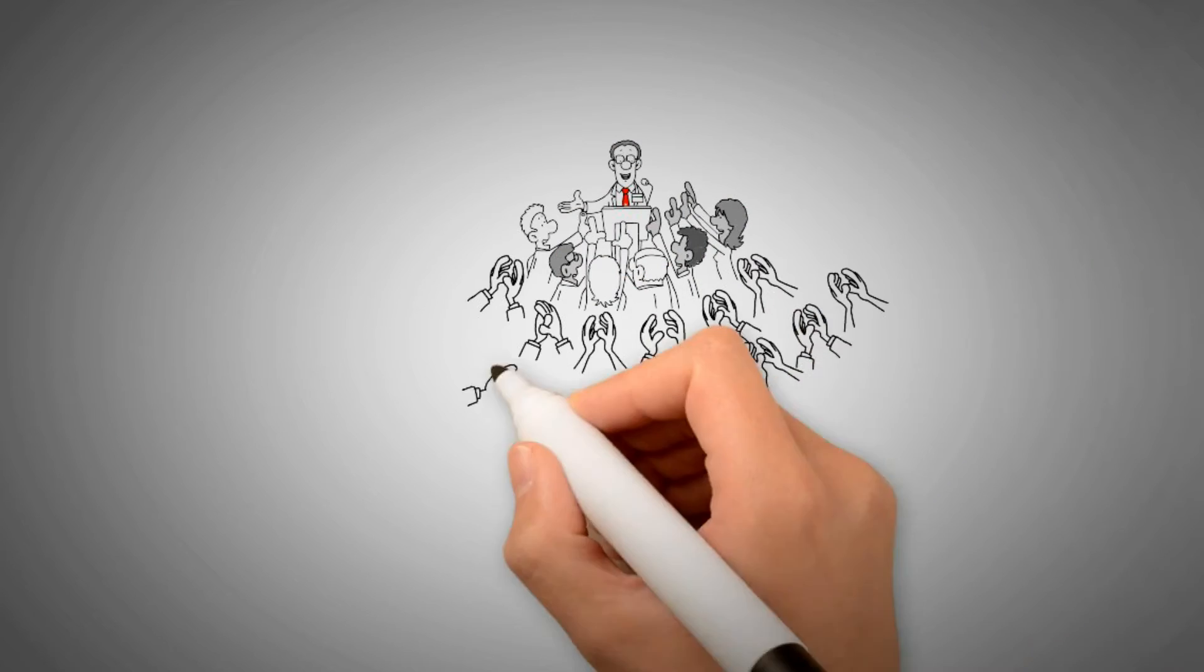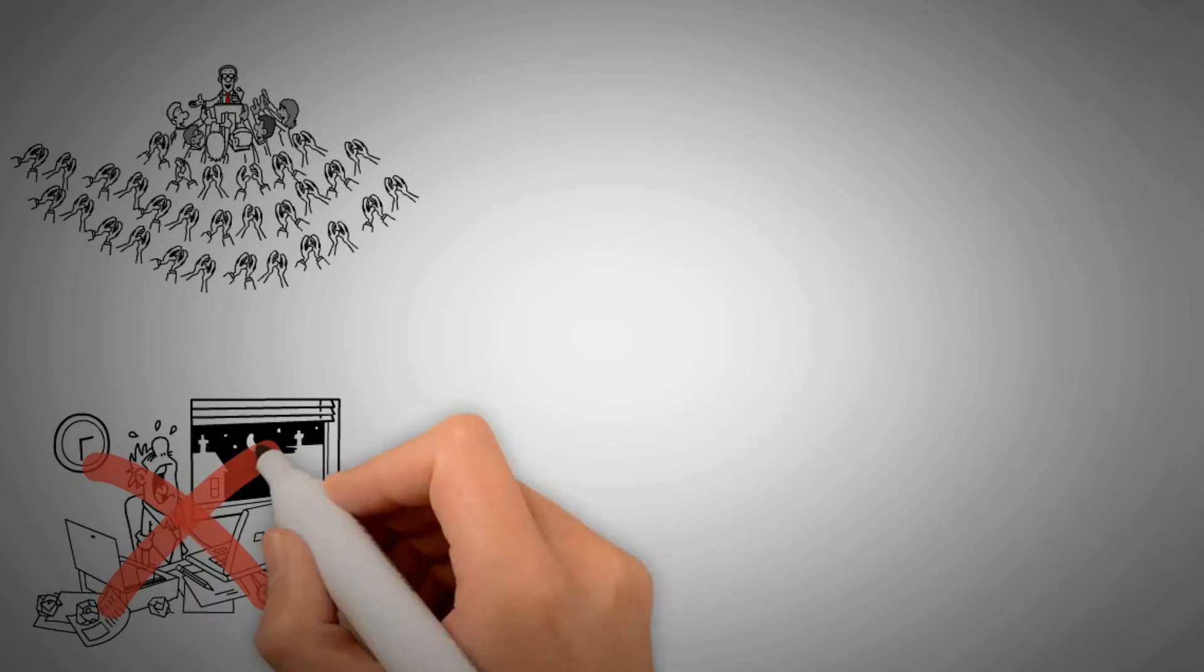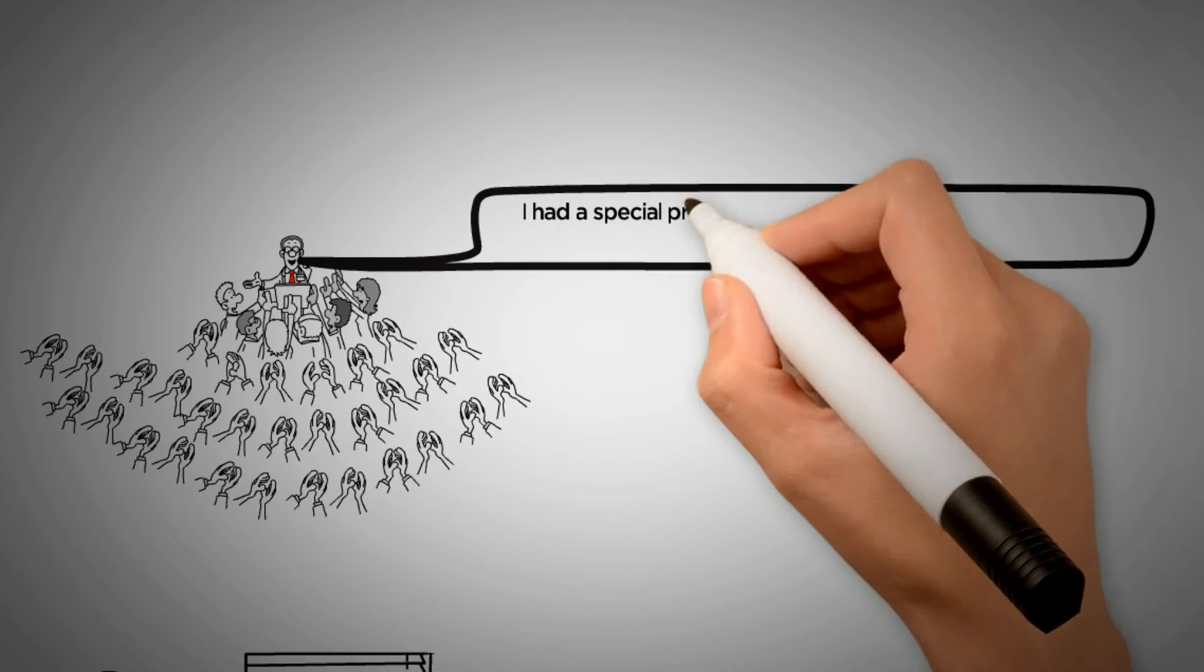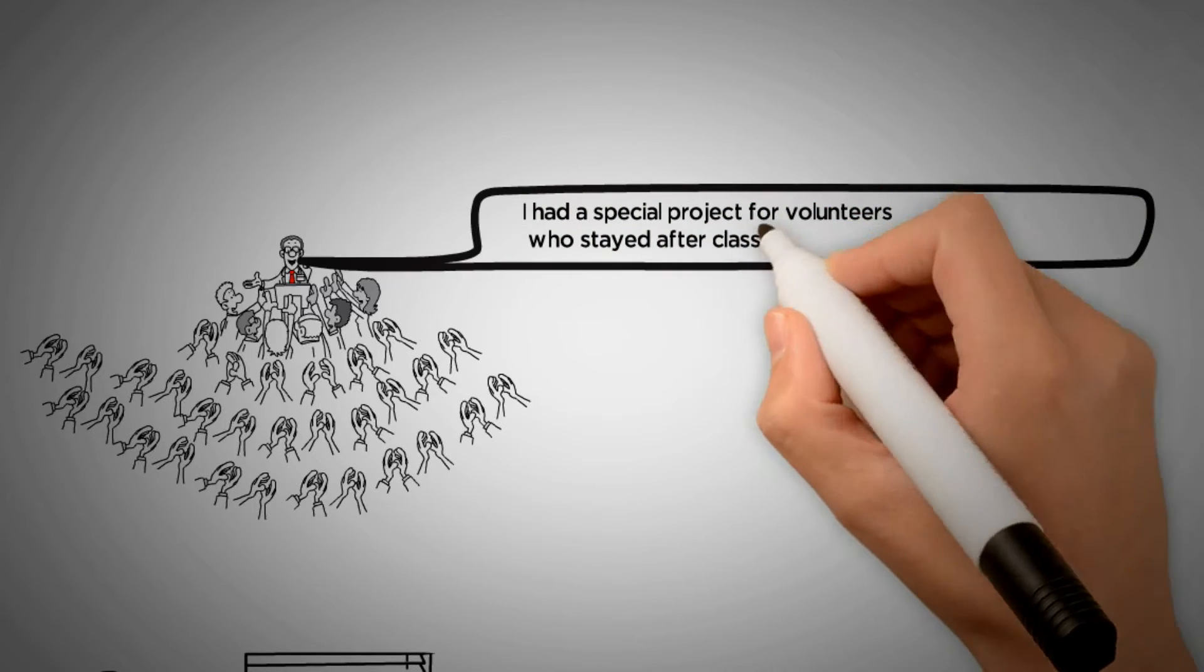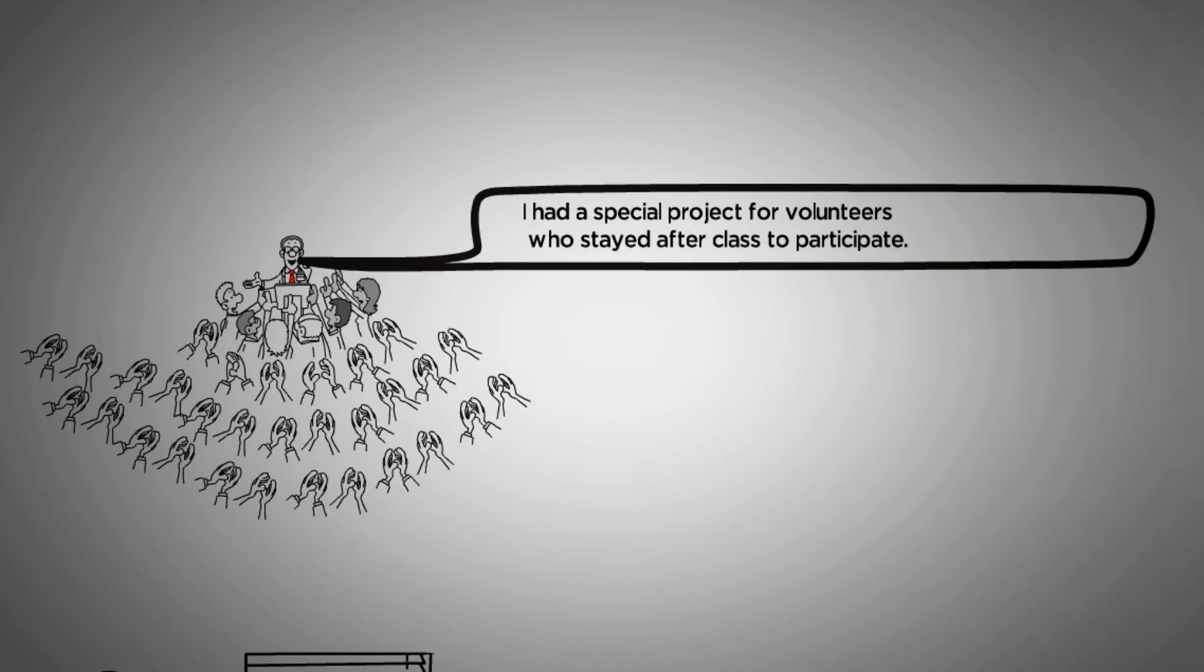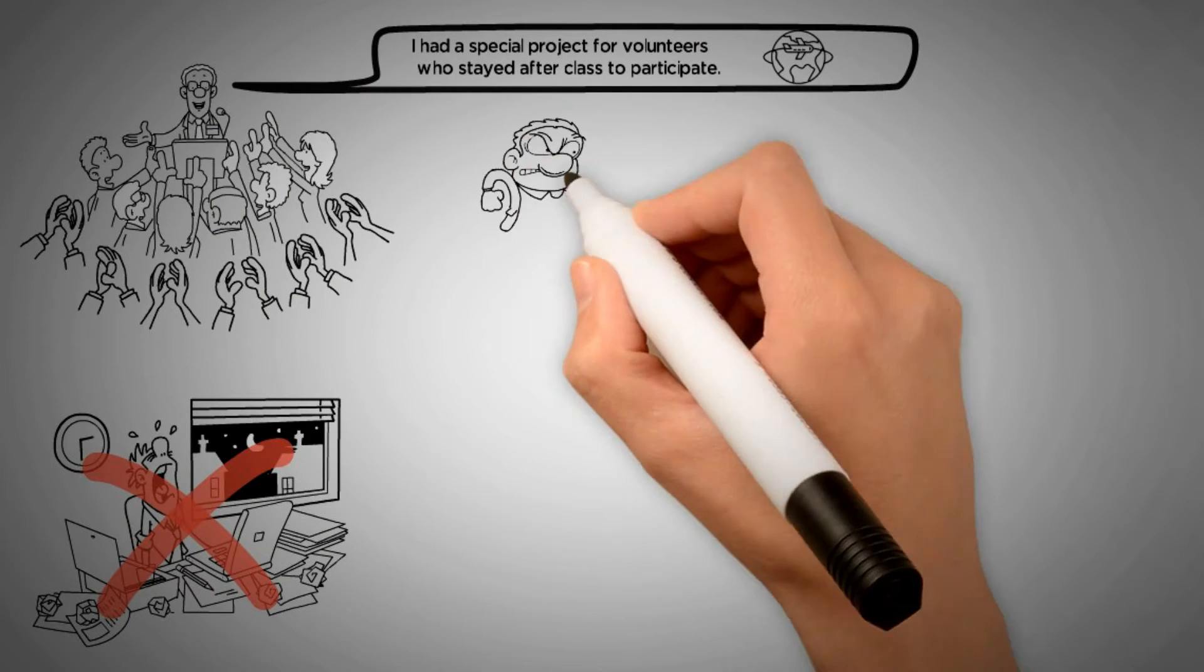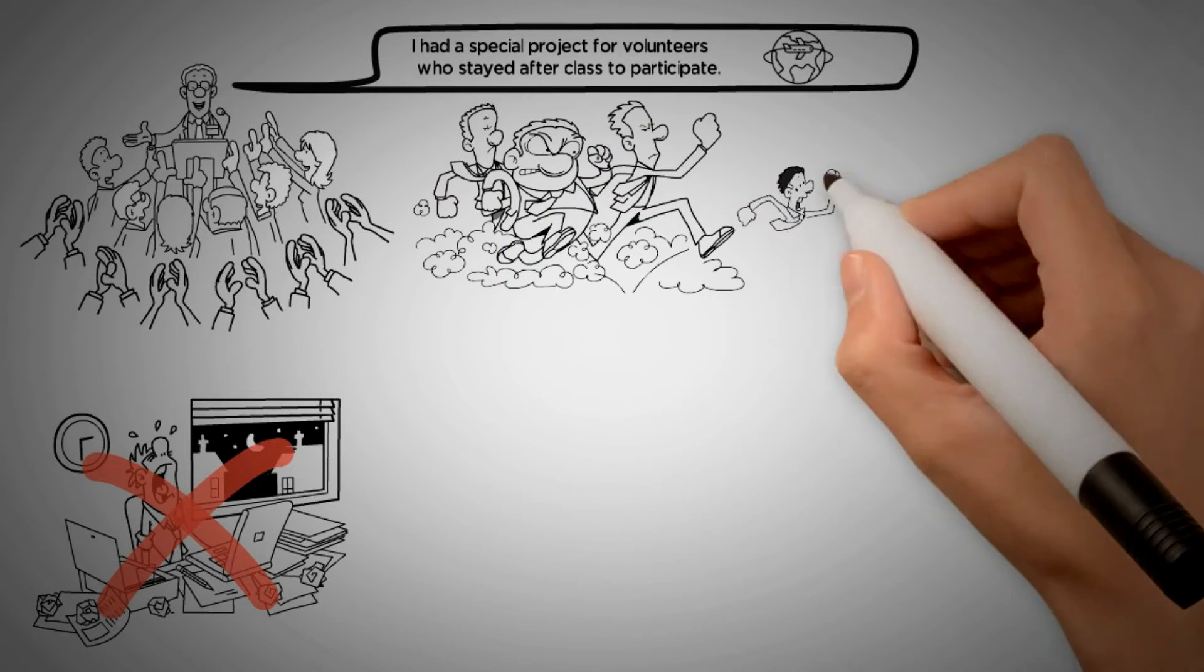Tim Ferriss gave a lecture to a group of 60 students. He was trying to teach them not to slave away at dead-end jobs they hate. At the end, he said he had a special project for volunteers who stayed after class to participate. Successful participants would get a round-trip ticket to anywhere in the world. Only 20 of 60 students hung back. It was, in fact, a competitive task.